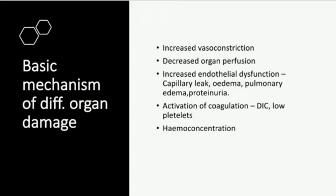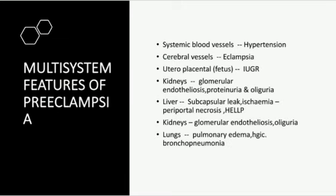In systemic blood vessels, this presents as hypertension due to vasoconstriction. In cerebral vessels it leads to eclampsia. In uteroplacental blood supply it leads to intrauterine growth restriction. In kidneys it causes glomerular endotheliosis, proteinuria, and oliguria. In the liver there is subcapsular leak, ischemia leading to periportal necrosis, and in severe states it leads to HELLP syndrome.